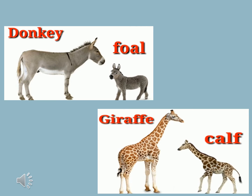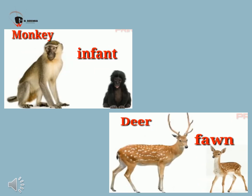Baby of a giraffe is calf. Giraffe is the tallest animal on land. A female giraffe can give birth to her baby after 15 months. When calves are born, they are already 6 feet tall. Monkey — Infant. Baby of a monkey is infant. Monkeys live on trees and the infants of monkeys are very naughty animals.